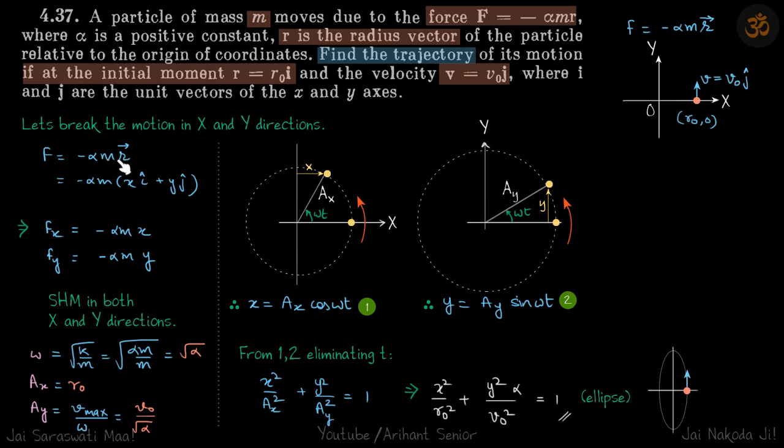Let's break the motion in x and y directions. Force is minus alpha m r equals minus alpha m, so r vector is x i cap plus y j cap. So Fx equals minus alpha m x and Fy equals minus alpha m y. So it's SHM in both x and y directions. Now the initial conditions is only what we need to bother about.